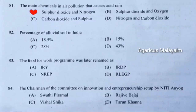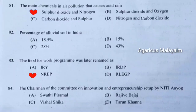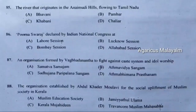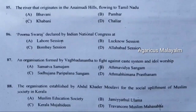Eighty-third question: The food for work program was later renamed as. Correct answer is option C — NREP. Eighty-fourth question: The chairman of the committee on innovation and entrepreneurship set up by NITI Aayog. Correct answer is option D — Tarun Khanna. Eighty-fifth question: The river that originates in the Anamudi hills flowing to Tamil Nadu. Correct answer is option B — Pampar.